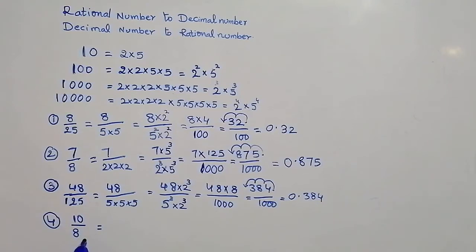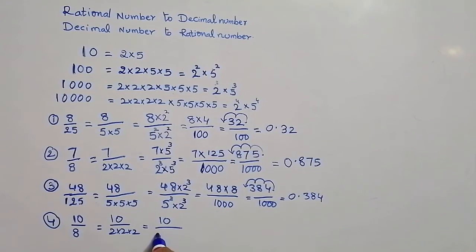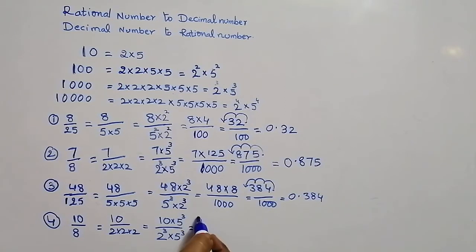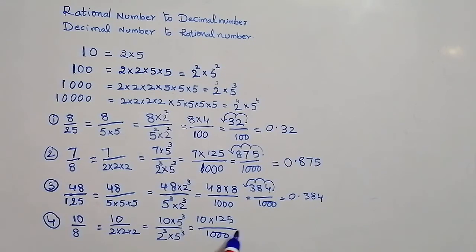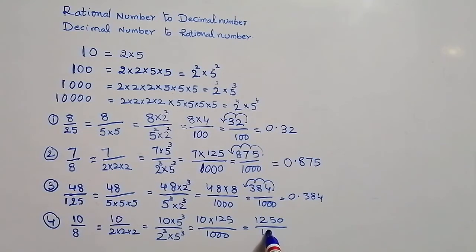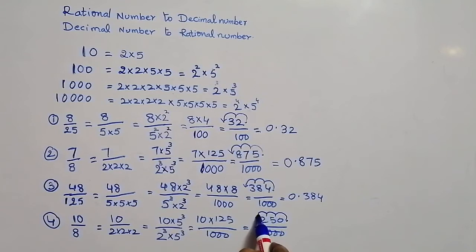Let us take 10 by 8. The denominator 8 is 2 power 3. We need 5 power 3 to get 1000. Multiplying numerator and denominator by 5 cube: 10 into 125 is 1250, divided by 1000. The decimal point moves 3 places to the left, giving the answer 1.250.